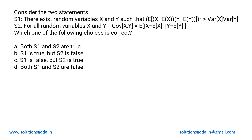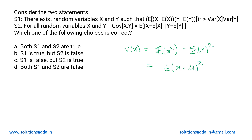This is a mathematics question based upon random variables and their covariance. For a random variable X, its variance can be given in terms of its expectation as: expectation of X squared minus expectation of X the whole squared. We can also write this as expectation of (X minus mu) squared, where mu is nothing but the expectation of X itself, which gives us expectation of (X minus expectation of X) squared.